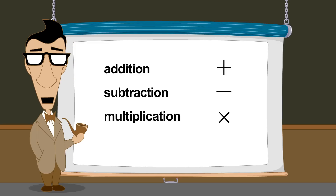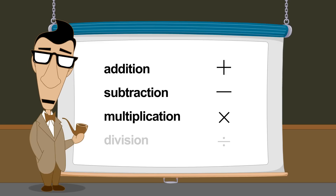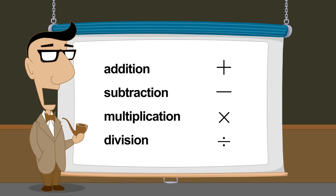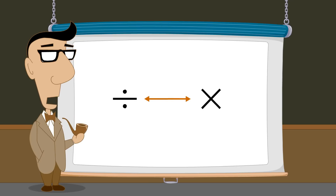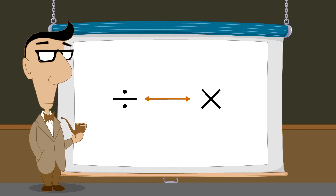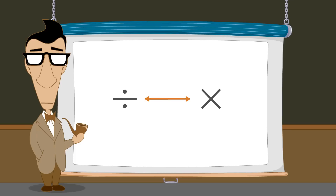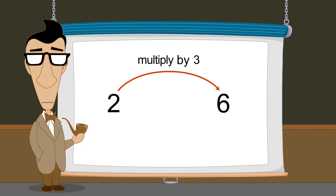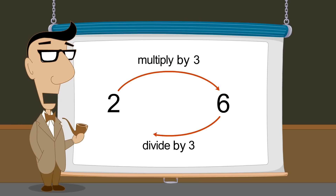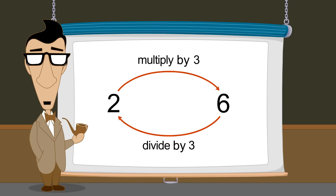The fourth arithmetic operation is division. Division is the inverse of multiplication since it undoes the result of a multiplication operation. For example, multiplying two by three gives us six, and dividing six by three gives us back our original two, undoing the multiplication.